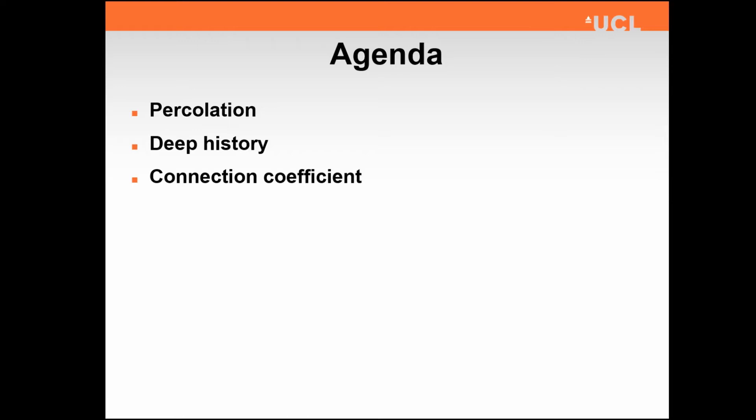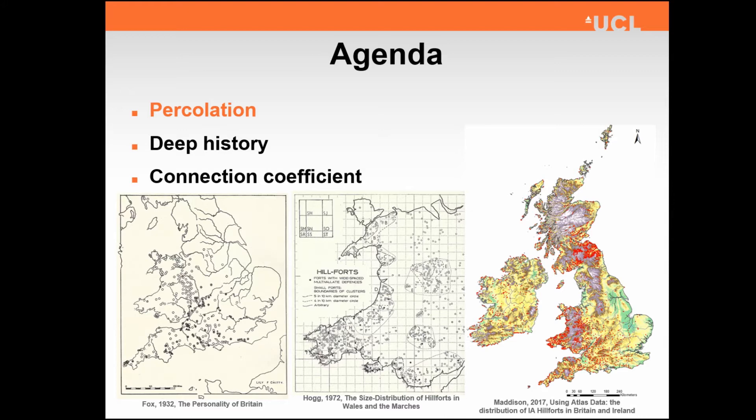I'm then going to talk a little bit about its application to probing deep history, and then I'm going to conclude with some new work that we've done on percolation analysis called the Connection Curcations — and I'll explain that as we go. Percolation analysis is a recent way that we've started working with for looking for patterns in spatial arrangements, and this is part of a long tradition.